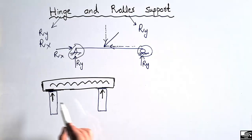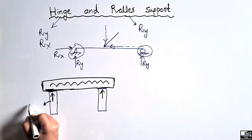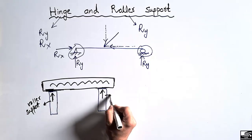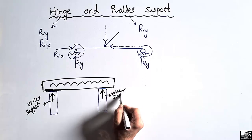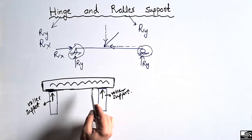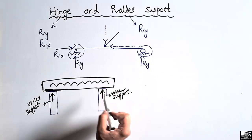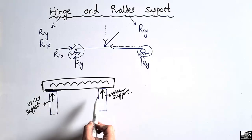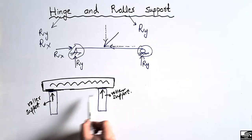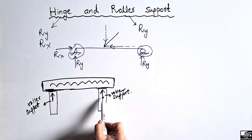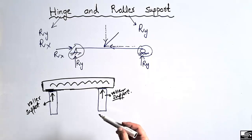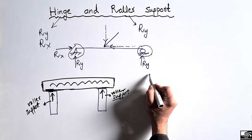The load of the beam will be distributed between these two columns, so this will be called a roller support. This column will act as a roller support, and similarly this column will also act as a roller support, because this beam is not connected to this column through reinforcement. We don't place any reinforcement between these two members — first we construct the column and then we place the beam on top. So there is no connection between these two members, and hence there will be only vertical resistance, and they will act as roller supports.